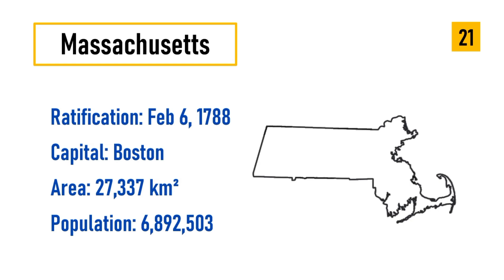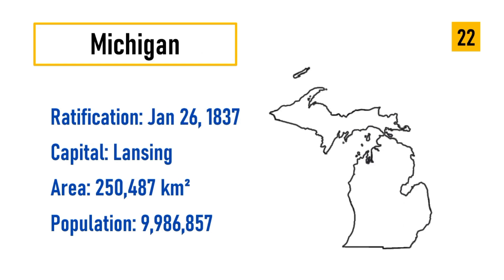Number 21: Massachusetts, ratification February 6, 1788, capital Boston, area 27,337 square kilometers, population 6,892,503. Number 22: Michigan, ratification January 26, 1837, capital Lansing, area 250,487 square kilometers.